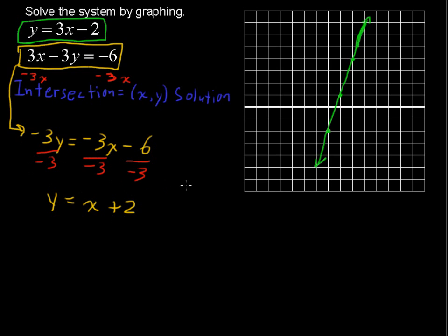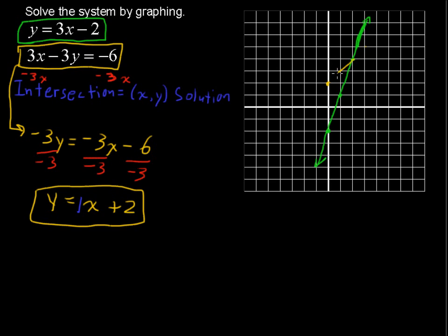What you'll have left is y equals positive x plus 2. So we have a y-intercept of 2 for this second equation. And a slope — remember, if you don't see a coefficient, it's 1. So a slope of 1. We go up 1 to the right 1, and up 1 to the right 1, and keep on going in that fashion.